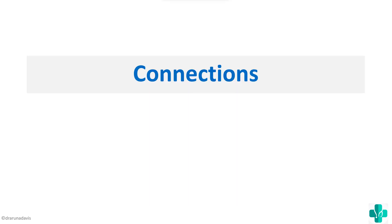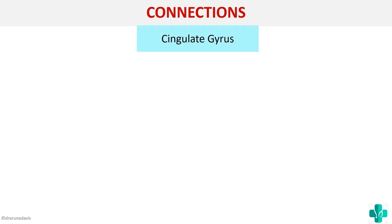Now we will see the basic connections of the limbic system. The connections are important because the functions arise from these connections. The connections of limbic system are very complex, so I've simplified them into a flowchart that contains the basic things you should know.